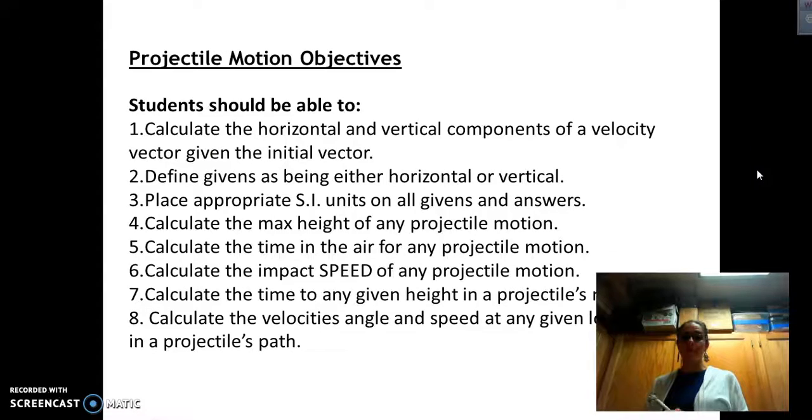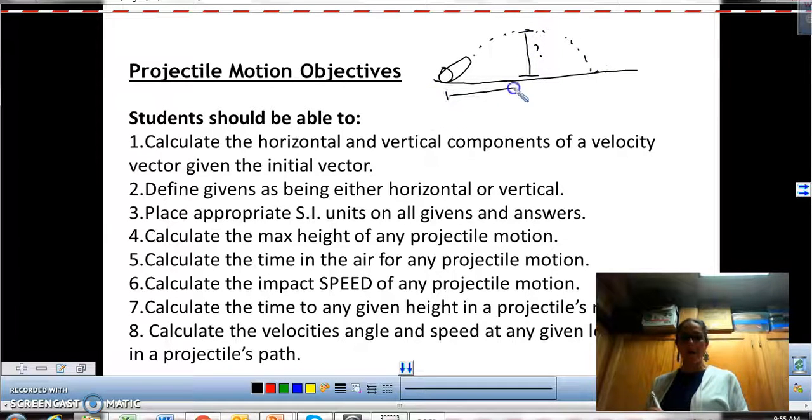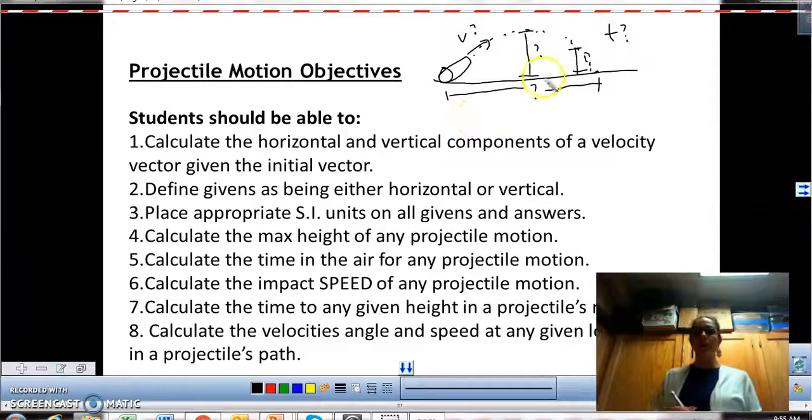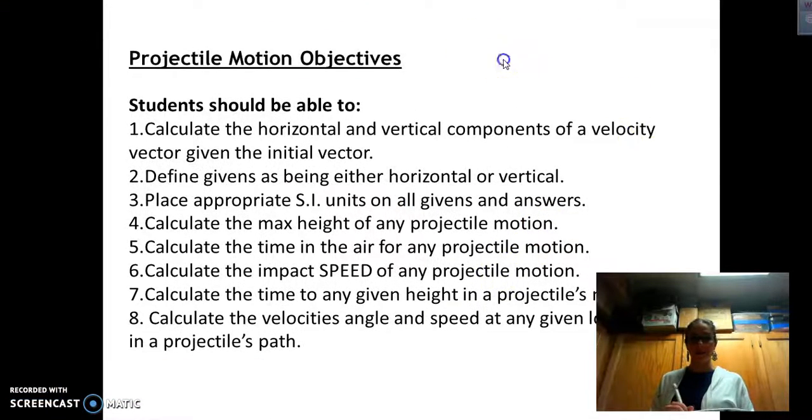So ideally we want to be able to calculate many things about an object being projected or launched. If we take like a cannon and launch an object, we want to be able to figure out how high did it go, how far, maybe how fast, how long. So we're looking at all these features and we're going to basically use kinematics to solve this, but the biggest hint is we have two motions, which means we need at least two equations. So that's what I'm going to basically discuss in this lecture.